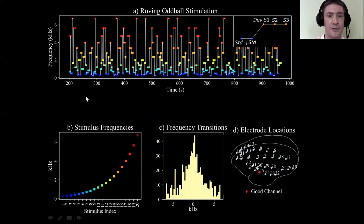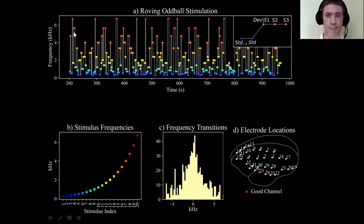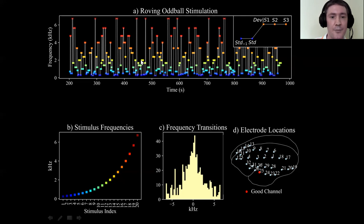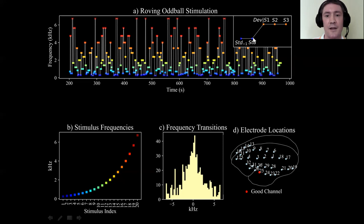Here's a snippet from Figure 1 of the paper. At the top, we see a representation of the roving oddball paradigm sequence. The different colored markers represent different tone frequencies, and the number of repetitions in each tone train were either three, five, or eleven. To analyze this data, the last stimulus in a tone train was considered the standard.